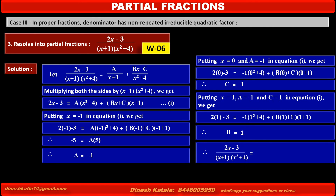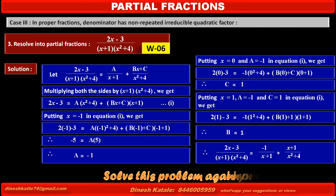Therefore, the fraction (2x minus 3) upon (x plus 1)(x squared plus 4) equals minus 1 upon (x plus 1) plus (x plus 1) upon (x squared plus 4), replacing A by minus 1 and B and C by 1 and 0 respectively. For better understanding, take a pause here and try to solve this problem again in your notebook without copying.